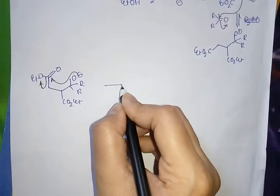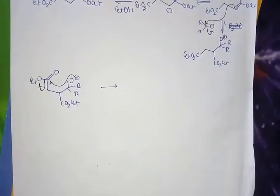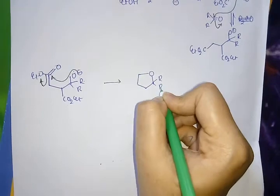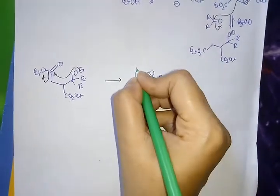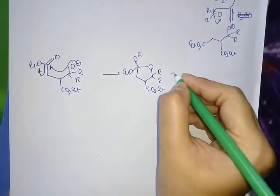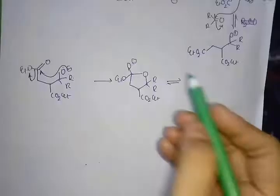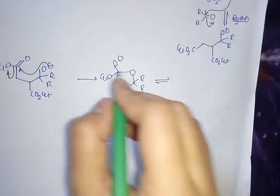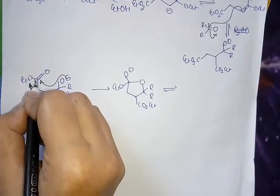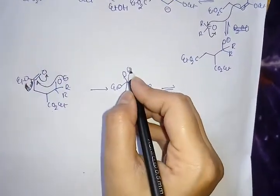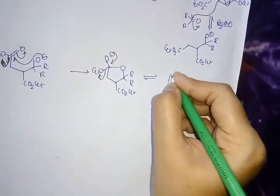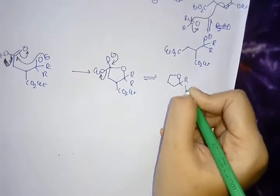Then alkoxide, then lactone will form. Here at first this will occur, then by backbonding this alkoxide will displace. Ultimately the lactone will form.